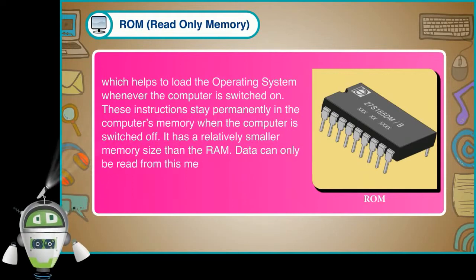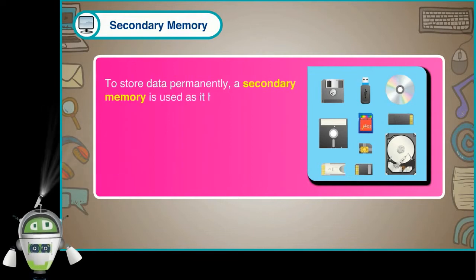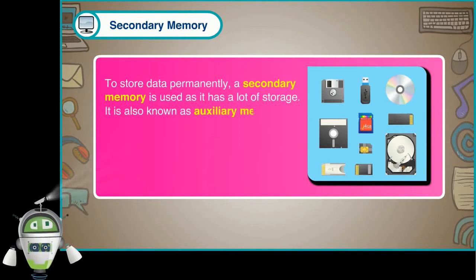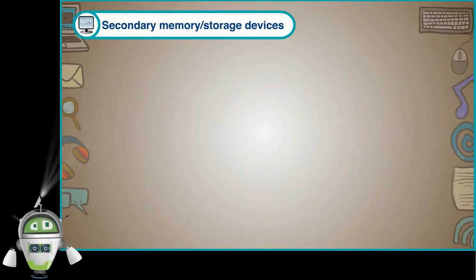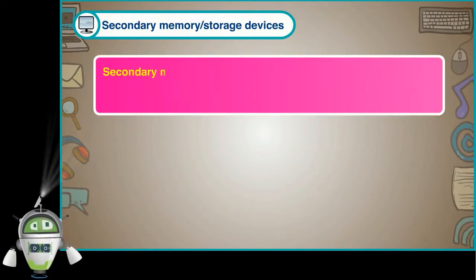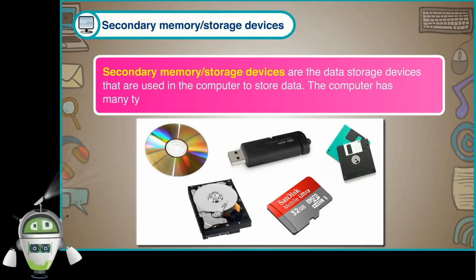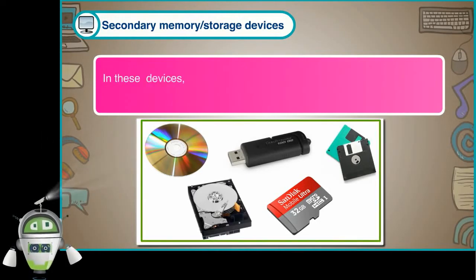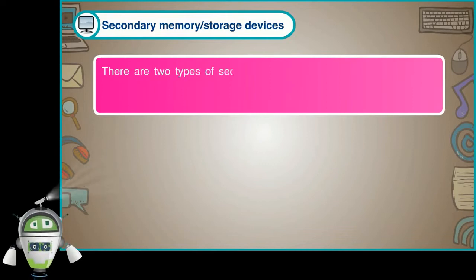Data can only be read from ROM and it is not possible to override any data in it. Secondary memory is used to store data permanently, as it has a lot of storage. It is also known as auxiliary memory or external memory. Many devices are used as secondary storage devices. Secondary memory or storage devices are the data storage devices used in the computer to store data. In these devices, information remains stored permanently until the user erases it. There are two types of secondary memory or storage devices.